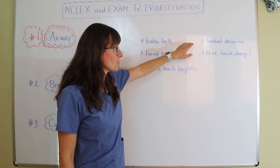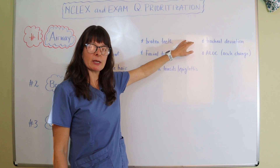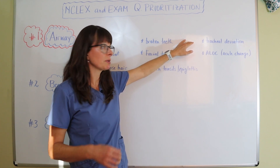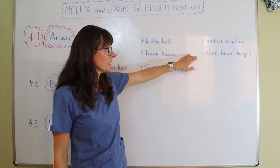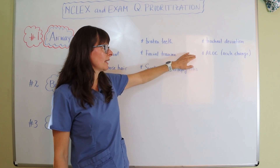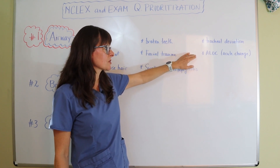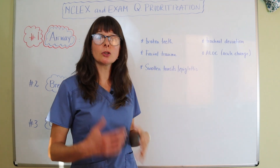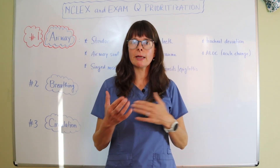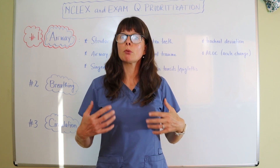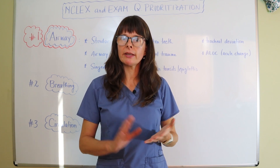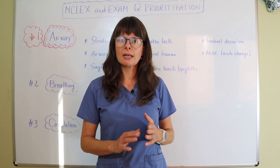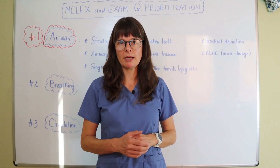Tracheal deviation is another indicator — some argue it's a breathing problem, but it fits into both the airway and breathing categories. Also very important is altered level of consciousness. Any acute change in consciousness is a top priority, because if the patient's brain isn't sending impulses to breathe and clear their airway, the patient will most likely need to be intubated.